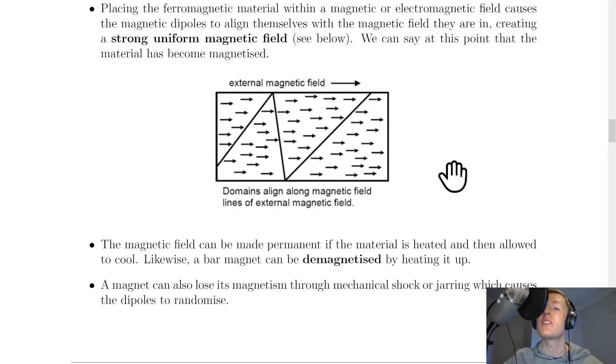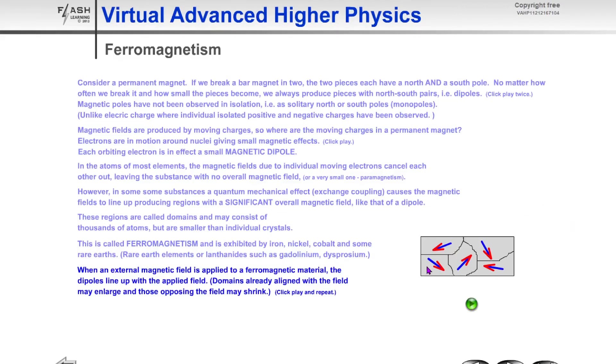Just to show you a quick simulation of this to help you understand it. If you look down the bottom right here at this ferromagnetic material you can see the dipoles are aligned randomly in different directions so in this case the ferromagnetic material will not be magnetised.